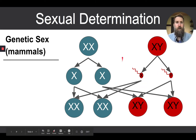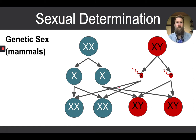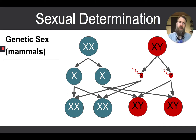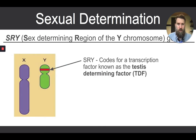It's the exact opposite in birds — in birds, it's the females that determine sex, because half of their eggs are Z and the other half are W. Now that we've run through the significance of the two different sex chromosomes and what that means during gamete formation and fusion, let's talk about what's special about the sex chromosomes.